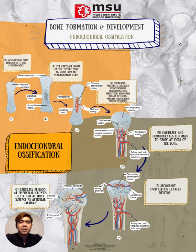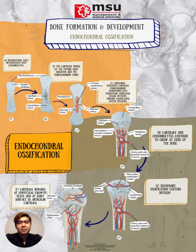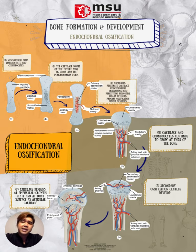Outside the perichondrium, a membrane that covers the cartilage, appears. As more matrix is produced, the chondrocytes in the center of the cartilage model grow in size. As the matrix calcifies, nutrients can no longer reach the chondrocytes, resulting in their death and the disintegration of the surrounding cartilage. Blood vessels invade the resulting spaces, carrying osteogenic cells — many of which become osteoblasts — and these spaces eventually combine to become the medullary cavity. The cartilage is penetrated, initiating the transformation of the perichondrium into the bone-producing periosteum. Osteoblasts form a periosteal collar of compact bone around the cartilage of the diaphysis. By the second or third month of fetal life, ossification ramps up and creates the primary ossification center, a region deep in the periosteal collar where ossification begins.